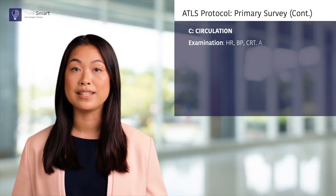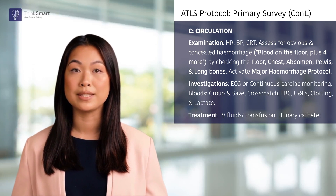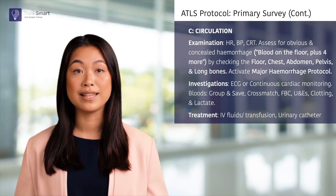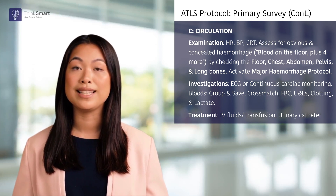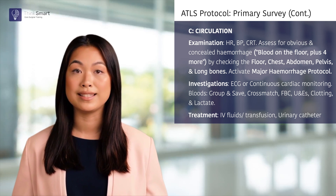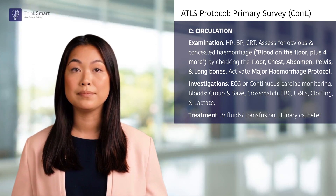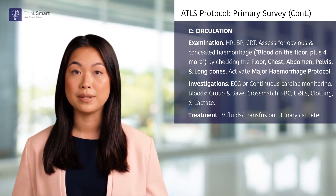Moving on to circulation, I would assess for hemodynamic compromise by measuring the pulses, blood pressure, and capillary refill time. Specifically, I would be wary of any blood on the floor and would closely assess the chest, abdomen, pelvis, and long bones as potential sites of concealed hemorrhage. If any major bleeding is identified, I would escalate the major hemorrhage protocol.